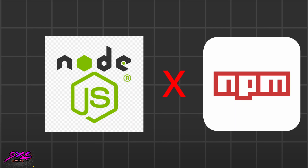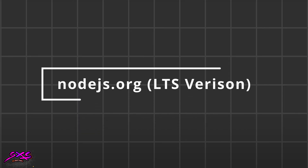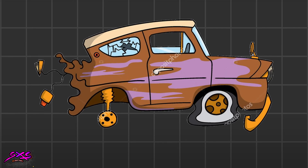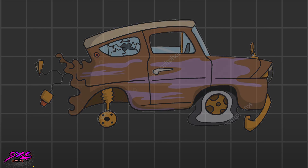First things first, we need to install Node.js and NPM. Think of Node.js as the engine of your car and NPM as the fuel — without them we're not going anywhere. Head over to the official Node.js website at nodejs.org and download the LTS version. LTS stands for long-term support, which is a fancy way of saying the stable version that won't explode. Alternatively, you can use the node installer, like having a personal assistant for Node.js versions. You can install it from the Node.js download page, which will be in the description.